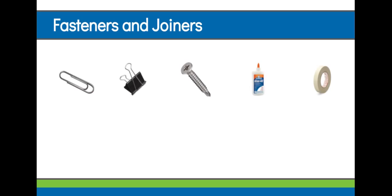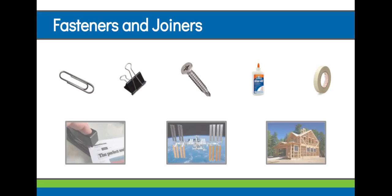There are two really important ideas that we want you to remember from today's video. First, a fastener is something that holds two or more objects or materials together. And the type of fastener that you use depends on the type of material that you are trying to join.